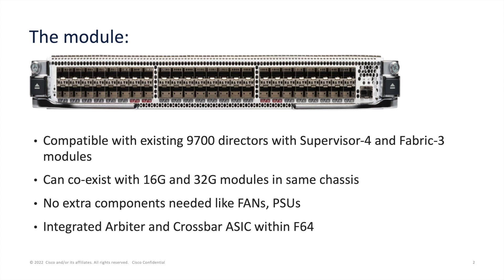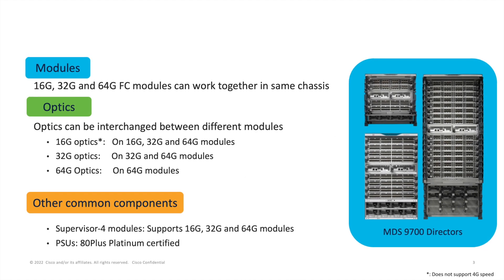This is the new 48-port 64GB Fibre Channel Module that uses dual ESIC, which is new in the industry. This ESIC can control over 24 ports from the front panel. This module can co-exist with the existing 16GB and 32GB Fibre Channel Modules and SAM extension module, and it works well alongside directors such as MDS 9710, 9706, and 9718.